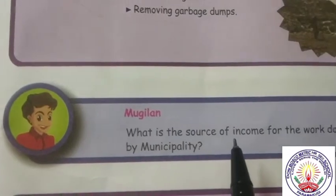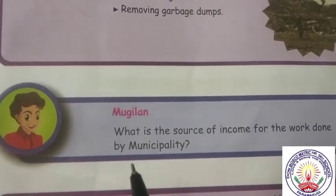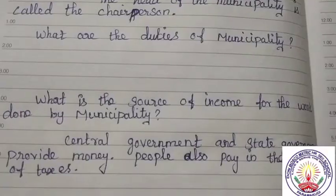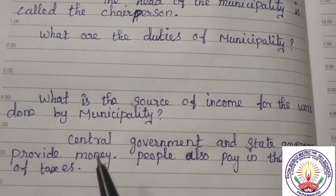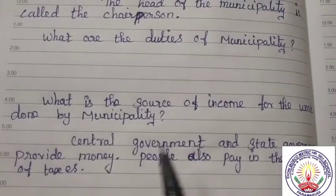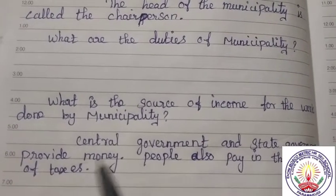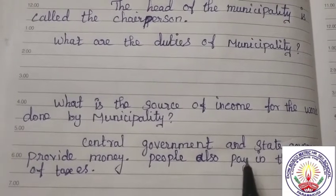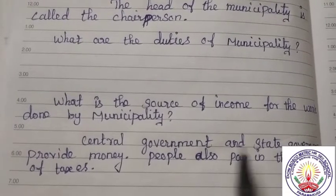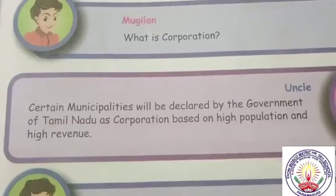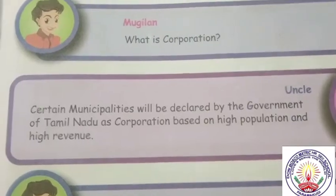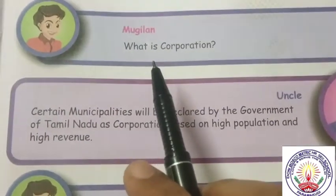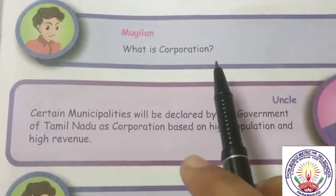What is the source of income for the work done by the municipality? The central government and state government provide money. People also pay in the form of taxes. Now let us see about Corporation.